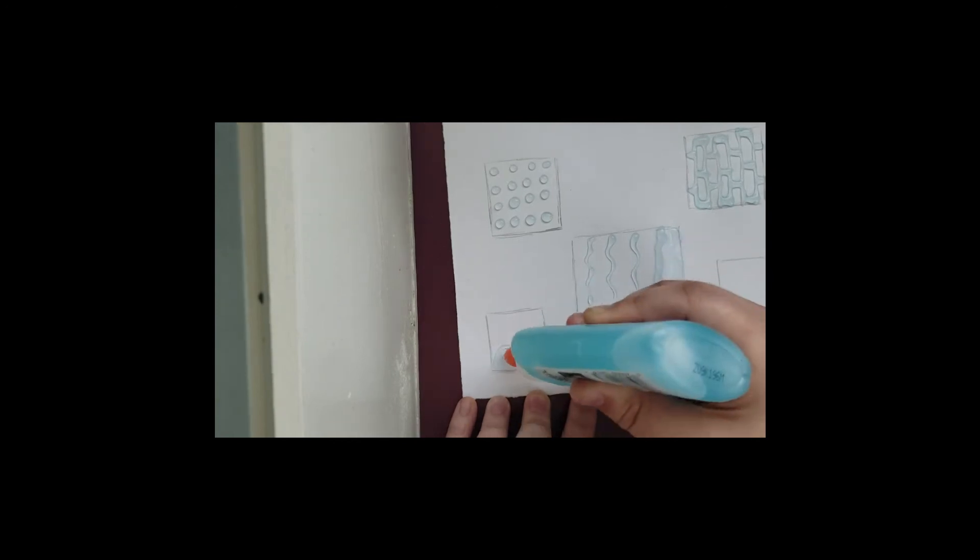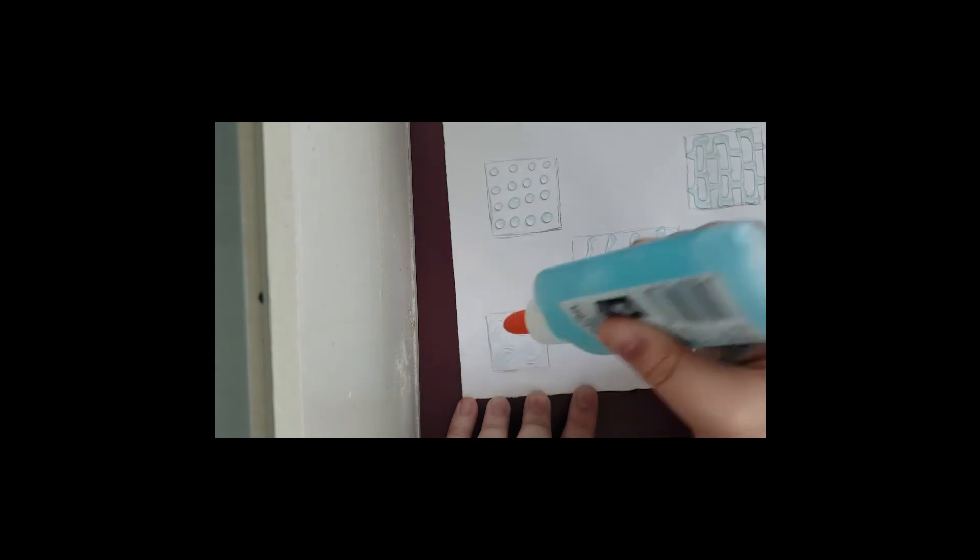And then one with swirls. And the last box I covered mostly with glue just to create a water-like texture.